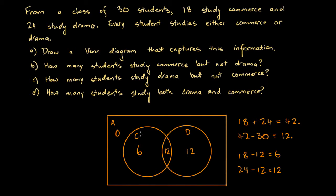So all up, we have 6 students who study commerce only, 12 students who study both drama and commerce, and 12 students who study drama only. And all up, 6 plus 12 plus 12: 6 plus 12 is 18, plus 12 again is 30. So we know for sure that there are 30 students in this class. So we've drawn a Venn diagram that captures this information. How many students study commerce but not drama? That's 6. How many students study drama but not commerce? That's 12. How many students study both drama and commerce? That's 12.